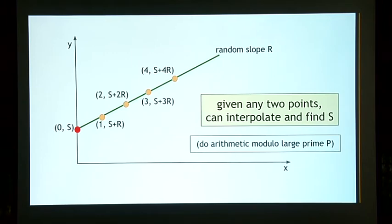Now, if you think about it, you can convince yourself that given any two points, you can interpolate and find s. That's a property of a line. Given any two points on a line, you can interpolate the line. Imagine setting down a ruler that exactly touches, say, these two points, and then you can just draw a straight line along that ruler. So given any two points, you can reconstruct what this line is. You can see where the line crosses the y-axis. That will be 0, s, and that will give you back the secret.